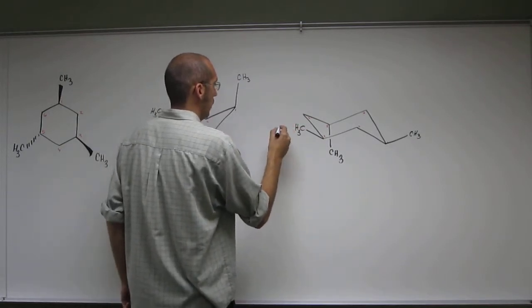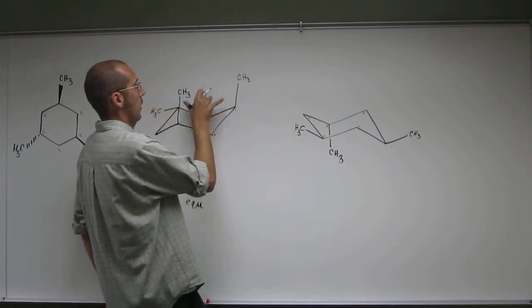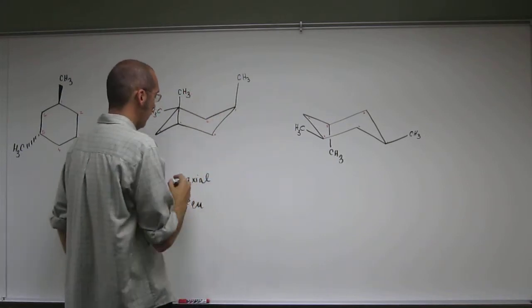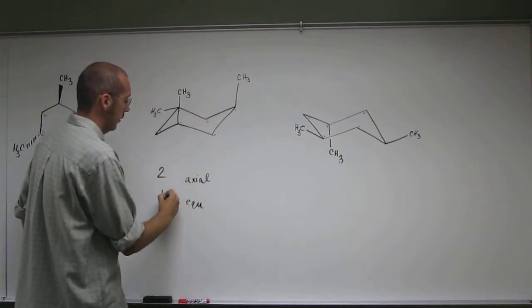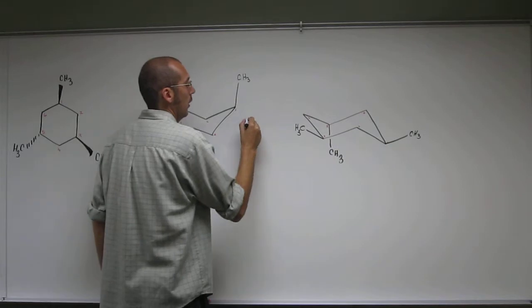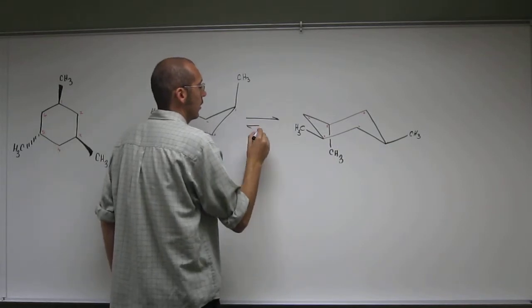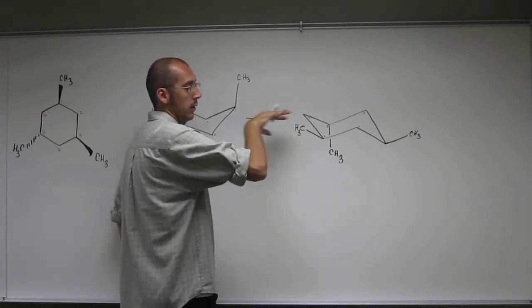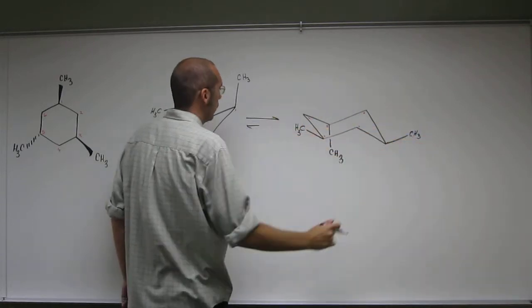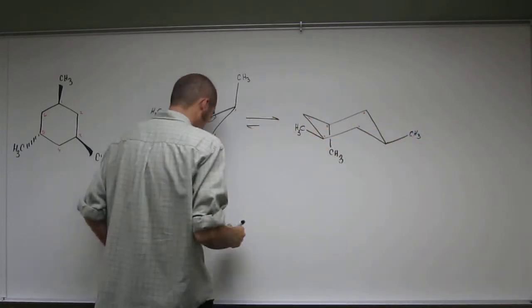So what did it do? It chair flipped, right, from the more strained structure. Why? Because we've got two axials and one equatorial, to the less strained structure. So the big arrow goes that way. It's like, oh, I really want to go over there. This one's like, no, I don't want to go.